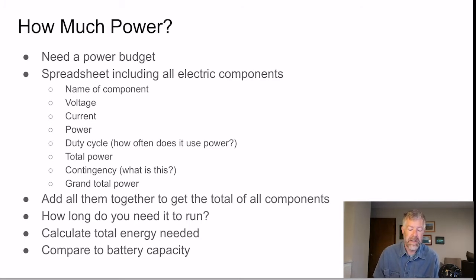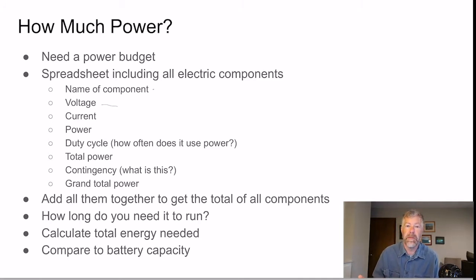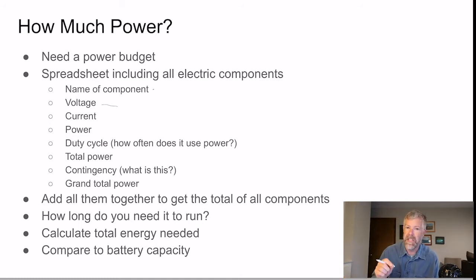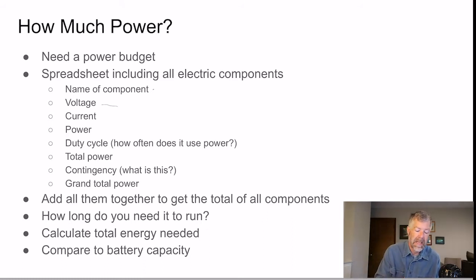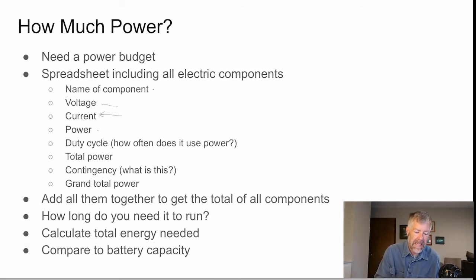To determine power needs, you create a spreadsheet listing all of your electronic components. You list the name of each component, the voltage it needs — which is important for tracking which lines things are on — and the current, which is usually specified on the data sheet. You multiply voltage and current together to get power.